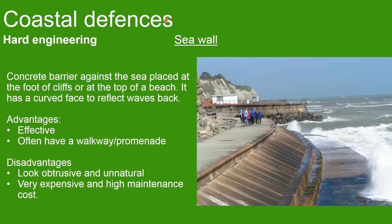Now we're looking at coastal defences — the hard engineering section. First is the seawall. A seawall is a concrete barrier placed against the sea at the foot of cliffs or the top of a beach. It has a curved face which reflects waves back. It's very effective as a hard engineering method, and often comes with a walkway promenade which boosts tourism. A disadvantage is that seawalls look obtrusive and unnatural, are very expensive, and have high maintenance costs as they can be at risk of erosion if left too long.